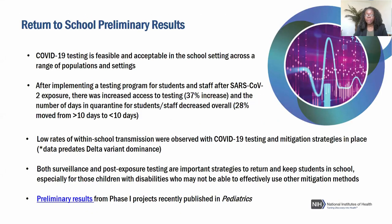Preliminary findings from the return-to-school effort demonstrate the feasibility and acceptability of COVID-19 testing across settings and multiple populations. One project found that after exposure to the virus, there was a 37% increase in access to testing and a 28% decrease in the number of quarantine days for students and staff to under 10 days. Among data collected before the two major variants of concern, testing and mitigation protocols were associated with low rates of within-school transmission.